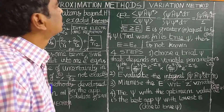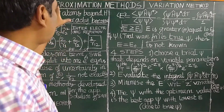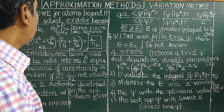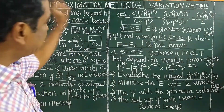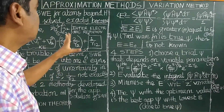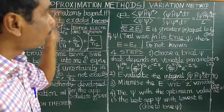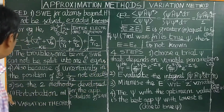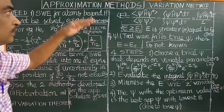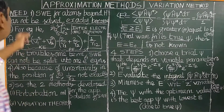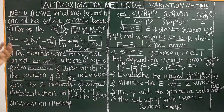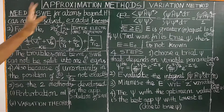Good morning. Let us study this class on approximation methods in quantum mechanics. What is the need for approximation methods? There are two approximation methods: perturbation method, variation method, and variation theorem. First we will study what is the need for approximation methods.